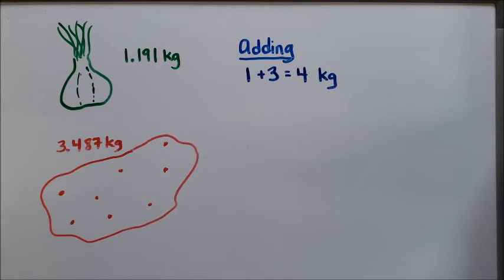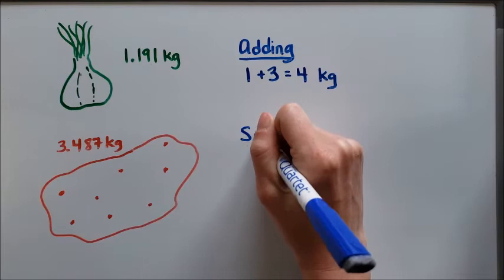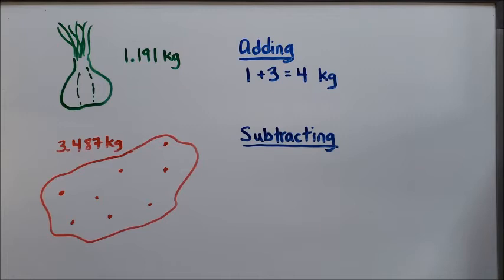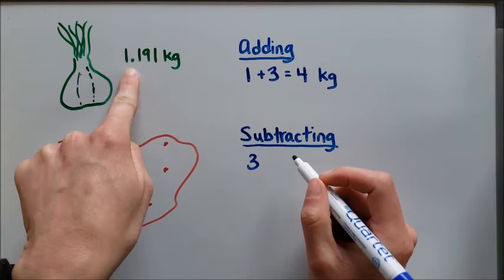Now the other thing that it asks us to do is to subtract and see what is the difference. To do that we're going to follow more or less the same steps. We are going to round or use that front end estimation and use our subtraction. We're going to start with the bigger one with the potato. So I'm going to have 3 minus 1 is equal to 2.